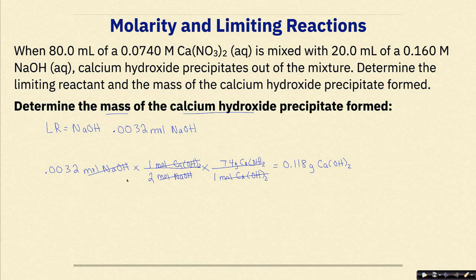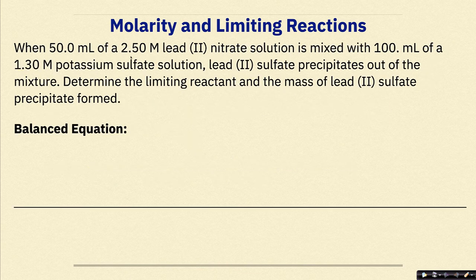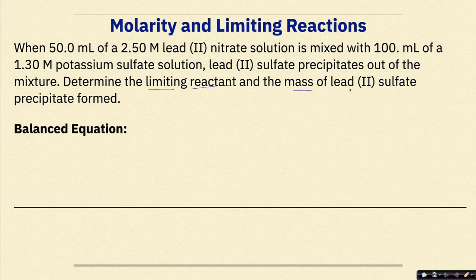Let's do another example. When 50 milliliters of a 2.50 molar lead(II) nitrate solution is mixed with 100 milliliters of a 1.30 molar potassium sulfate solution, lead(II) sulfate precipitates out of the mixture. Determine the limiting reactant and the mass of the lead(II) sulfate precipitate that is formed. Again, we start with a balanced equation.